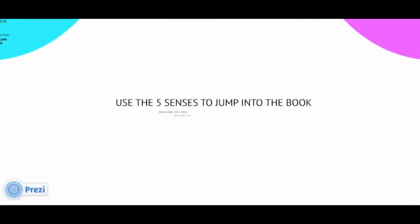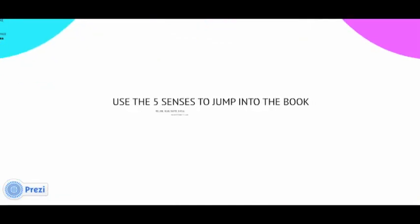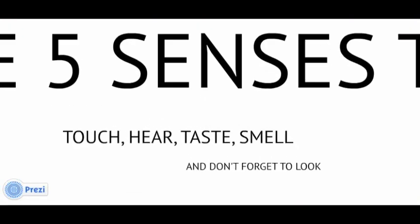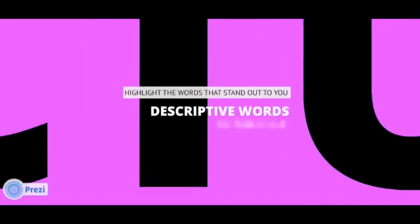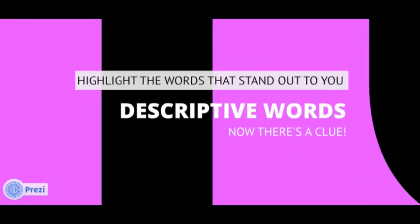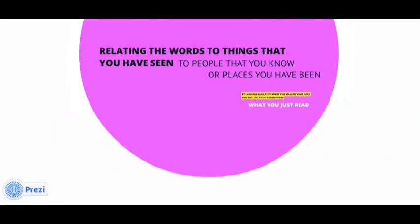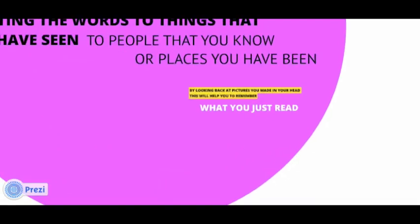Use the five senses to jump into the book: touch, hear, taste, smell, and don't forget to look. Pretend you're at the movies using your eyes — picture the story and visualise. Highlight the words that stand out to you, descriptive words — now there's a clue. Relating the words to things that you have seen, to people that you know or places you have been.